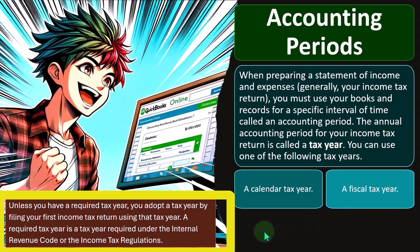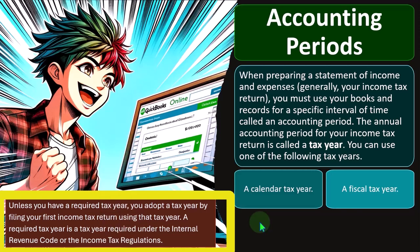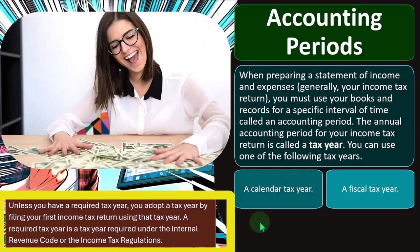A required tax year is a tax year required under the Internal Revenue Code or the income tax regulations. Remember, we're not looking at generally accepted accounting principles here — we're talking tax code. That means that in certain instances, your bookkeeping might be different than your taxes, because your bookkeeping might be set in accordance with other regulations such as GAAP, or a basis necessary for the bank or external investors, which might differ slightly from what the tax code requires for compliance on your tax return.